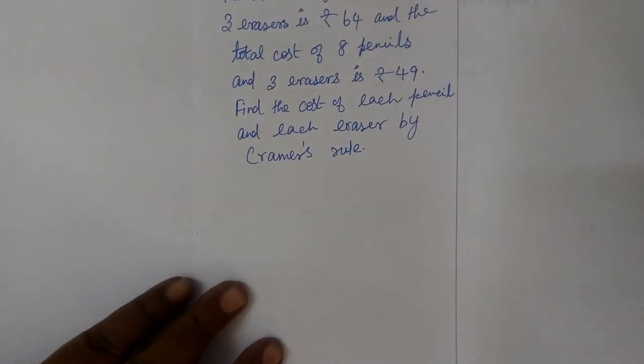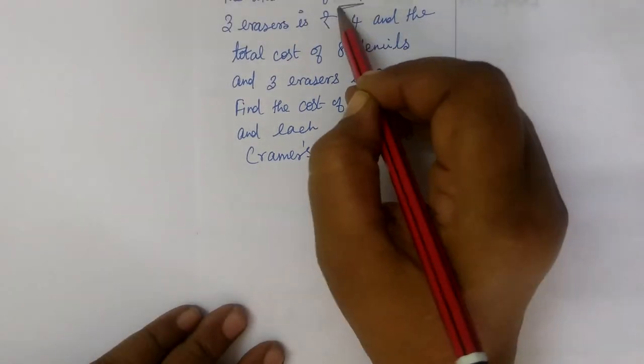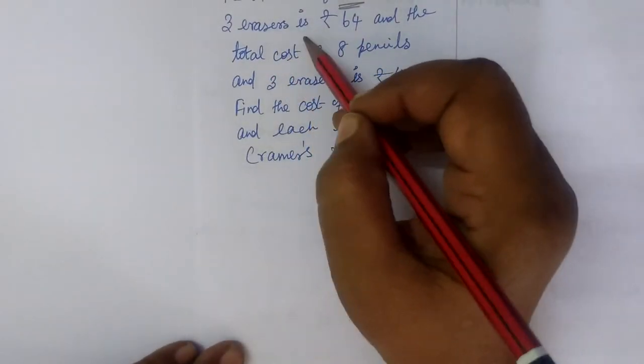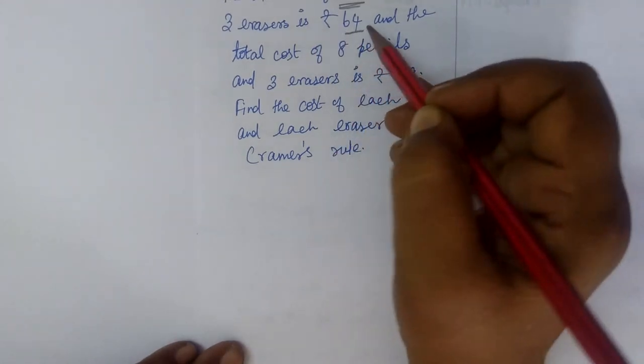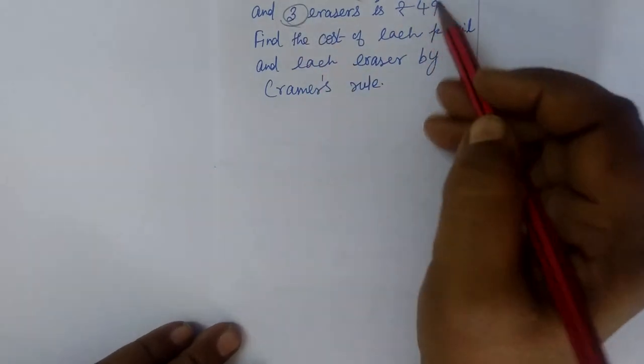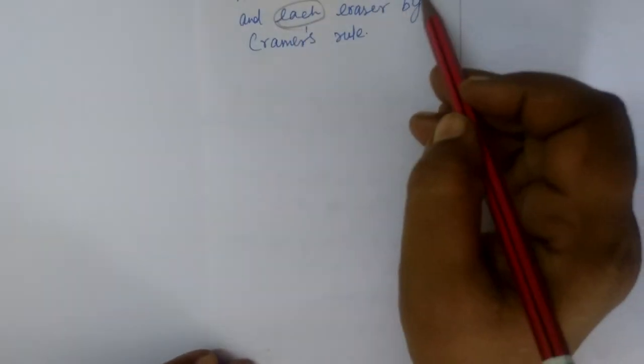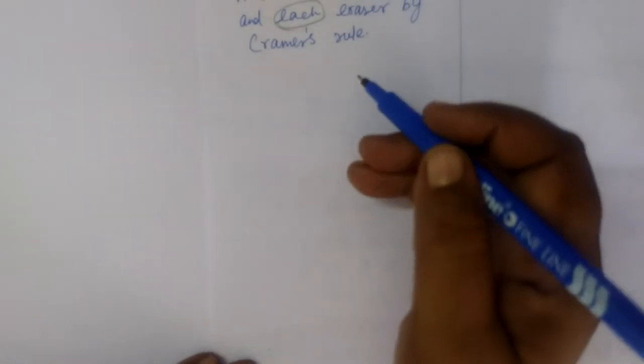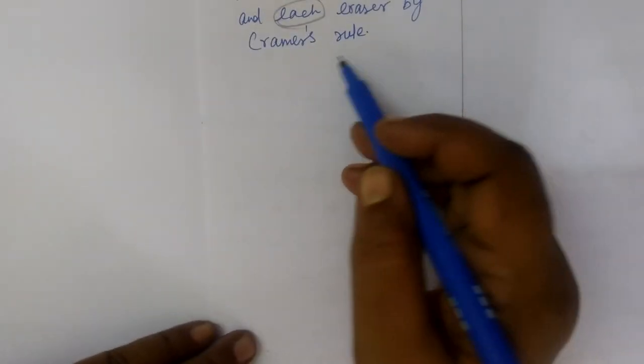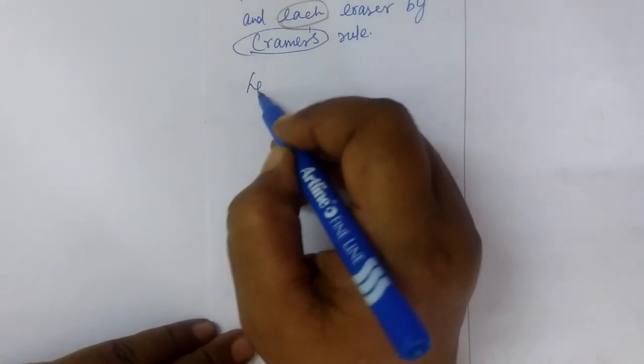Next problem: the total cost of 11 pencils and 3 erasers is Rs. 49. Find the cost of each pencil and each eraser. So form the equation first using Cramer's rule.